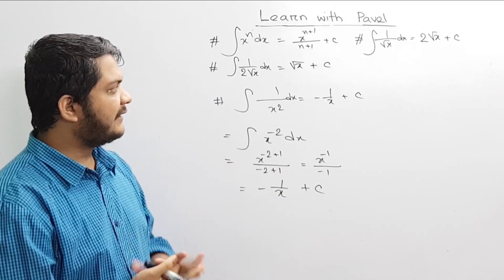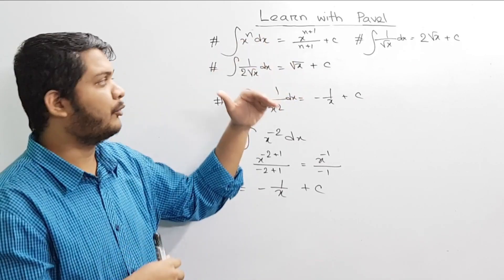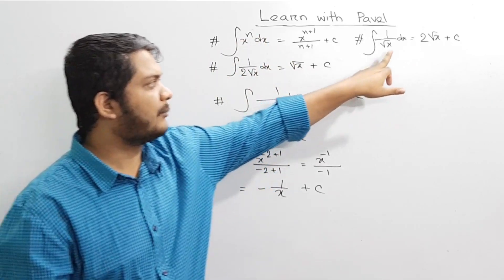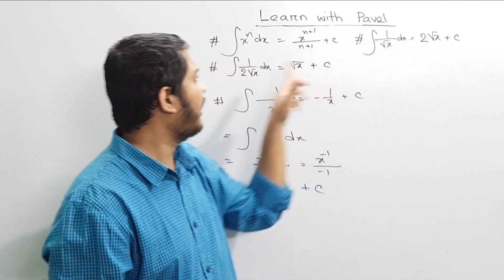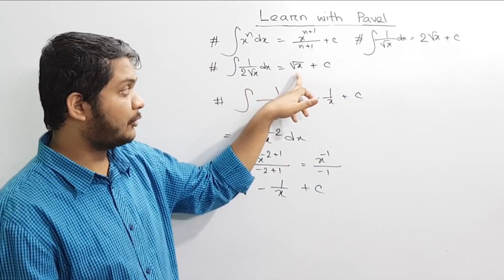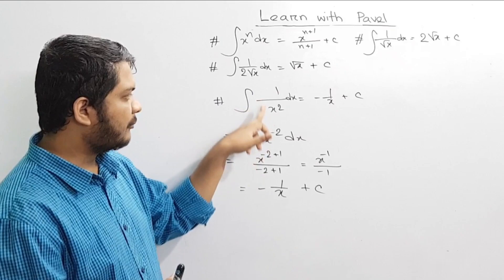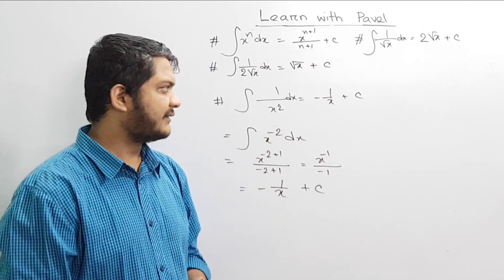So we have these formulas: 1 by root x is 2 root x plus c, 1 by 2 root x dx is 2 root x plus c, and 1 by x squared is minus 1 by x plus c.